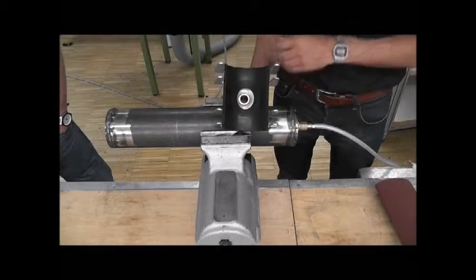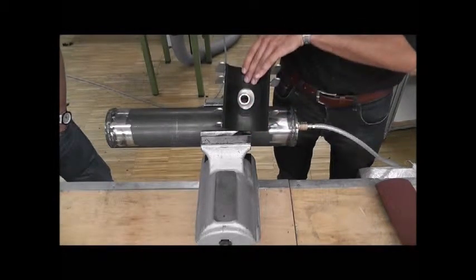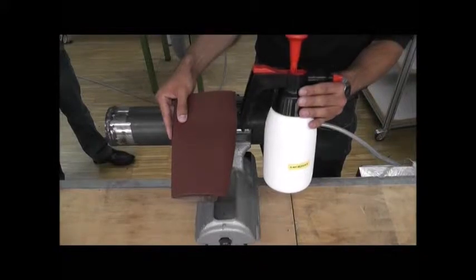Here you can see the gasket of the tapping clamp. The gasket has to fit perfectly on the pipe. Therefore, we have to prepare the pipe before. To prepare the pipe, we use some sandpaper and a cleaner.